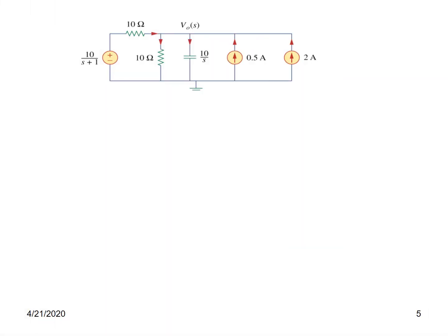We now apply KCL at the node. Looking carefully at the circuit, there are two currents entering the node and two paths where current is leaving the node. Let's write the KCL equation — entering currents first.